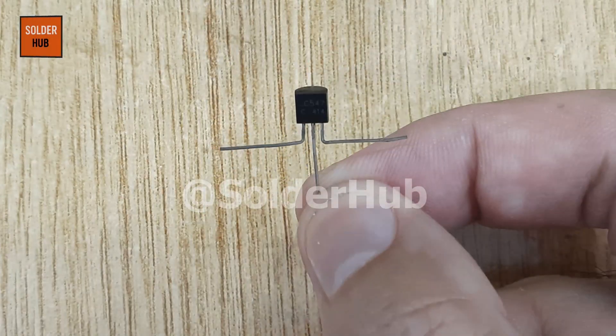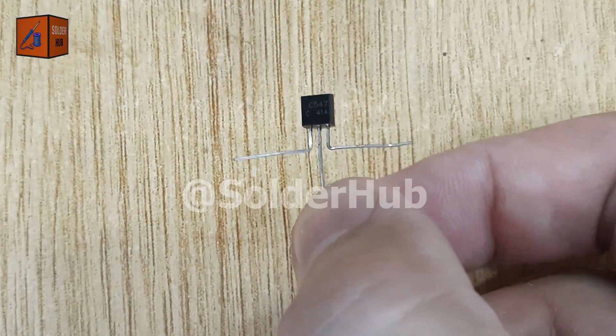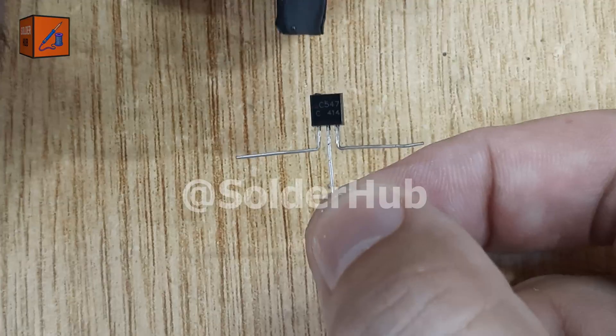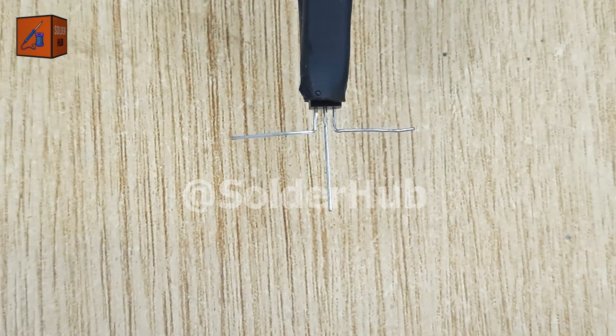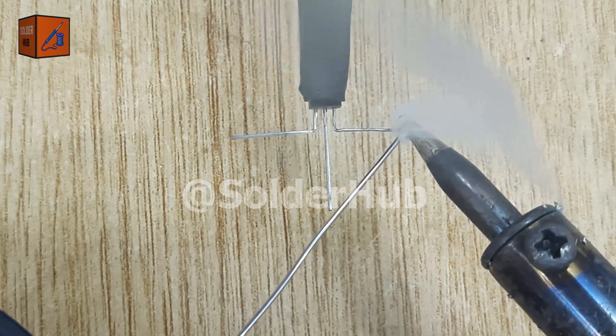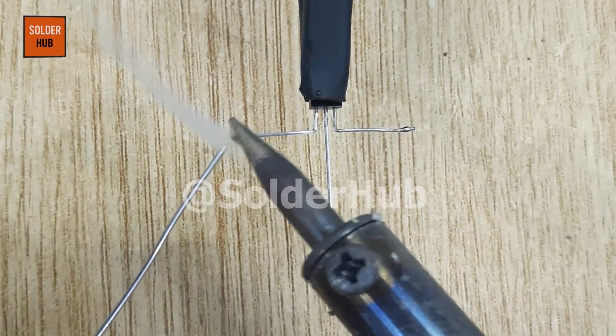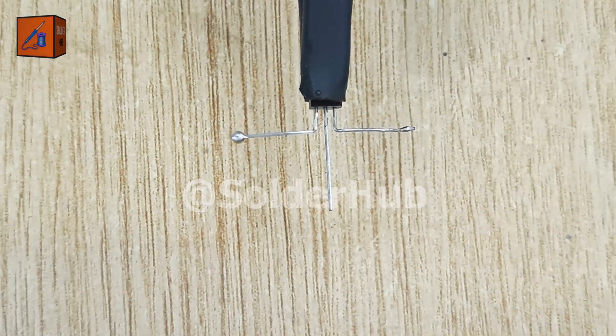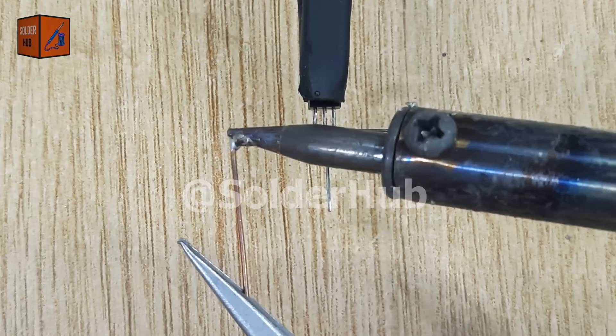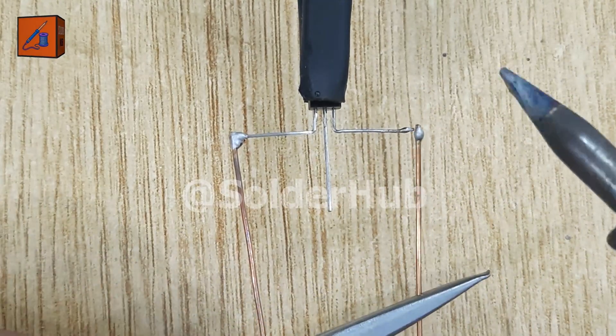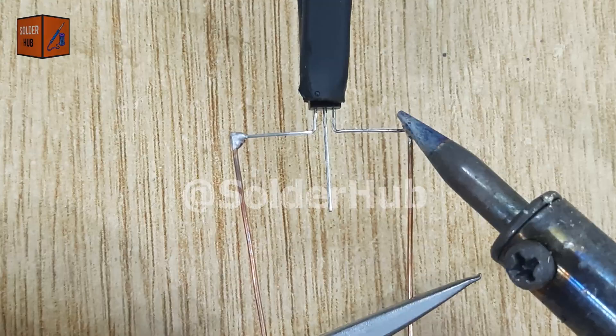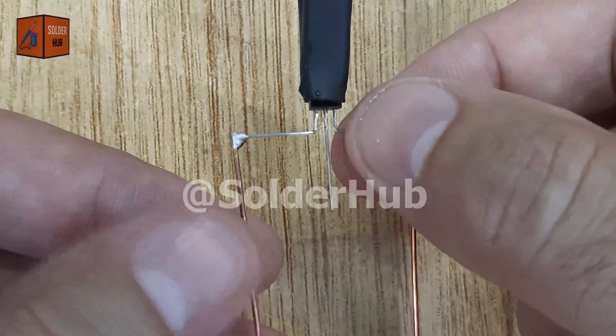First, here is a BC547 transistor. This is one of the most commonly used NPN transistors in electronics projects. I'll start by applying a thin layer of solder on its emitter and collector pins so we can make strong joints. Next, I'll solder two copper wires, one to the collector and the other to the emitter of this transistor. These wires will act like small bridges, making it easier to connect other components later.